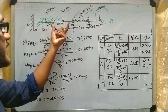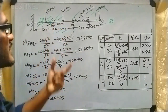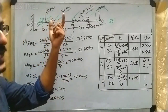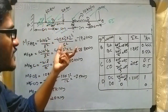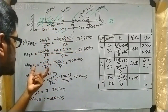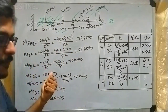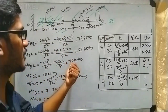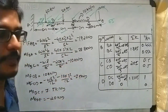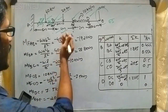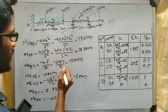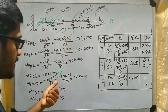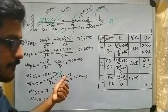For the BC span, the 20 kN load acts at the center, so using M_BC = -WL/8, substituting gives -10 kN·m. M_CB is positive with the same magnitude: +10 kN·m.